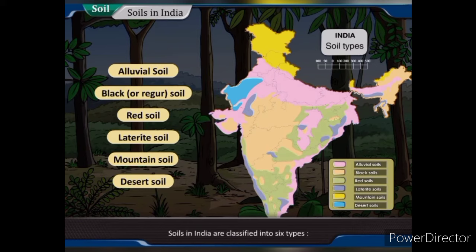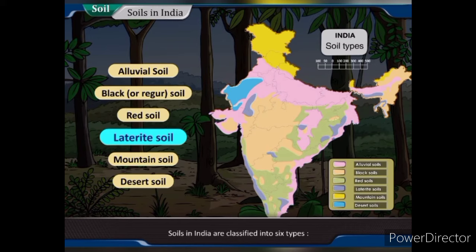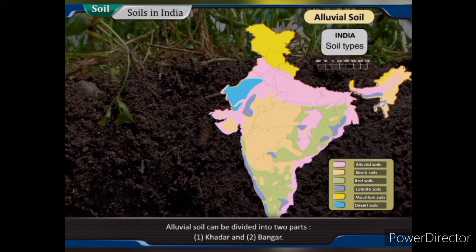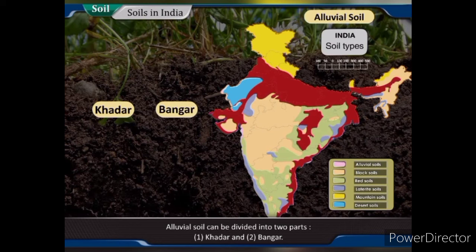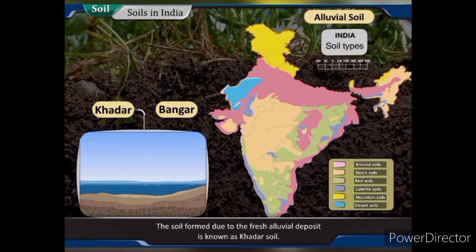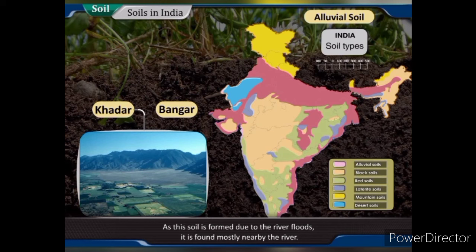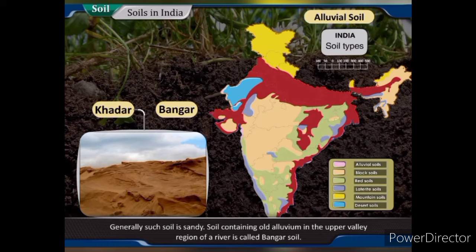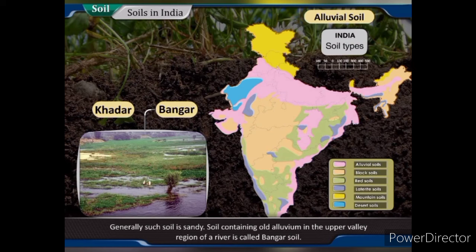Soils in India are classified into six types: 1. Alluvial soil, 2. Black or Regur soil, 3. Red soil, 4. Laterite soil, 5. Mountain soil, and 6. Desert soil. Alluvial soil can be divided into two parts — Khadar and Bangar. The soil formed due to fresh alluvial deposit is known as Khadar soil; as it is formed due to river floods, it is mostly found near the river and is generally sandy. Soil containing old alluvium in the upper valley region of a river is called Bangar soil; it is sticky and has a dark color.